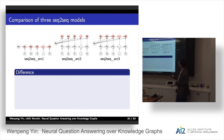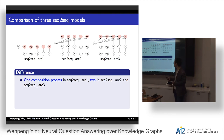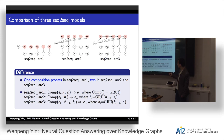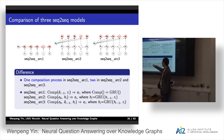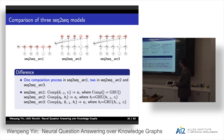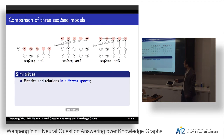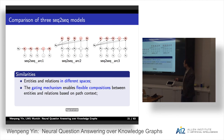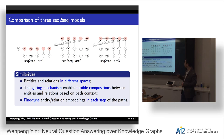Now we compare the three architectures. The difference: only one composition process in architecture one, but two composition processes in architectures two and three. In the first architecture, it composes the preceding prediction with the current relation to predict. The second one encodes the head entity and the hidden state to predict. The third composes the head entity and the preceding prediction with the current hidden state to predict. They share similarities: entities and relations are in different spaces; the gating mechanism in the recurrent neural network enables flexible composition between entity and relation based on context.